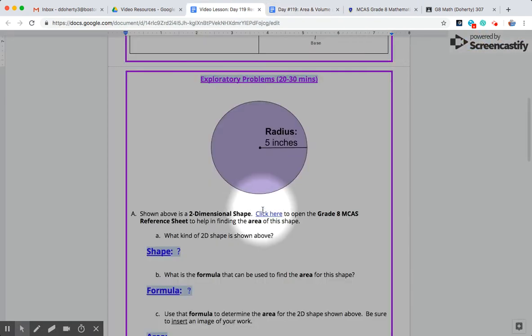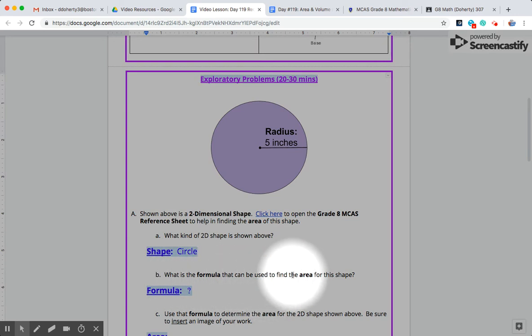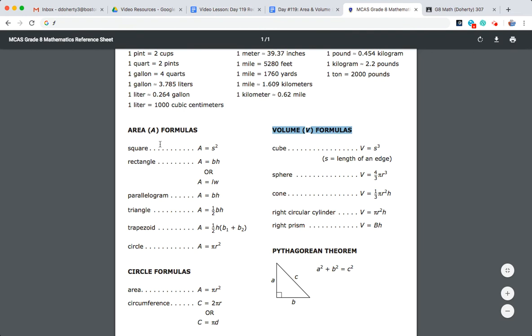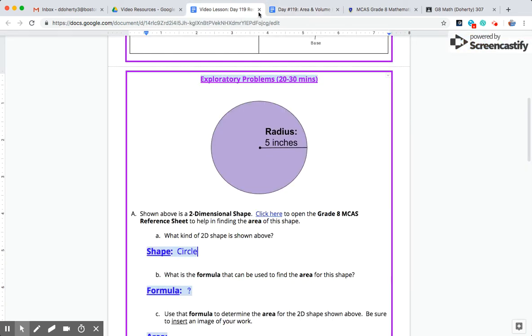Tabbing back to our work on the video lesson here today. The first problem asks us what kind of two-dimensional shape is shown above, and that's this purple circle we see here. So hopefully a bunch of you identified this as a circle, a two-dimensional shape that's just perfectly round. The next part they asked us what is the formula that can be used to find the area for the shape. So again you would go to your MCAS reference sheet, I'm looking for area, the shape that I'm working with is a circle, and I see the formula is A equals pi r squared. So I'm going to go ahead and put that formula in there: A for area is equal to pi times the radius, and the radius has to be squared.